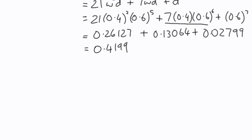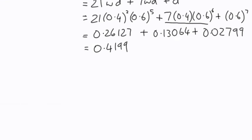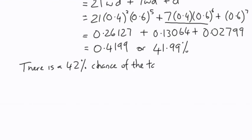So the probability of at least five dry days in the week is 0.4199. That, of course, is 41.99%, which you could keep exactly, and it's clearly very close to 42%. So we can just summarize that. And we could say there is a 42% chance of the task being completed.